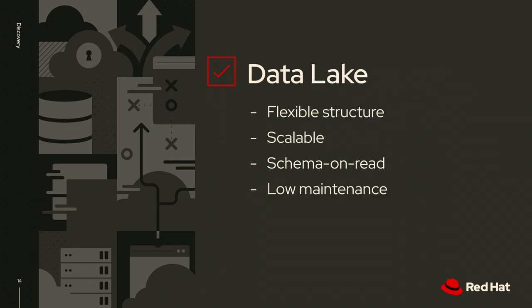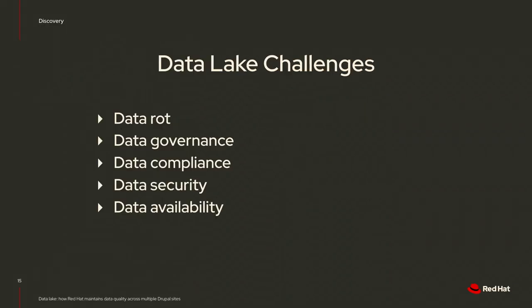Then they found data lakes — very flexible in structure, scalable, schema on reads, meaning you define the schema when you read the data. It's low maintenance; a lot of management has to happen outside of the data lake. One thing you run into with a data lake, or when abstracting data away from its source, is data rot — what happens when data gets outdated or unreliable, and how do you manage this effectively?